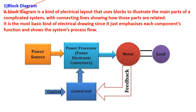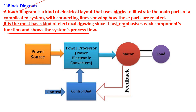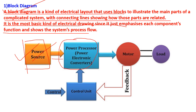The first one is block diagram. A block diagram is a kind of electrical layout that uses blocks to illustrate the main parts of a complicated system, with connecting lines showing how those parts are related. It is the most basic kind of electrical drawing, since it shows each component's function and the system process flow. Here we have given one example of a block diagram showing different types of blocks — power source, power processor, and power electronic converters — using square and rectangular blocks.